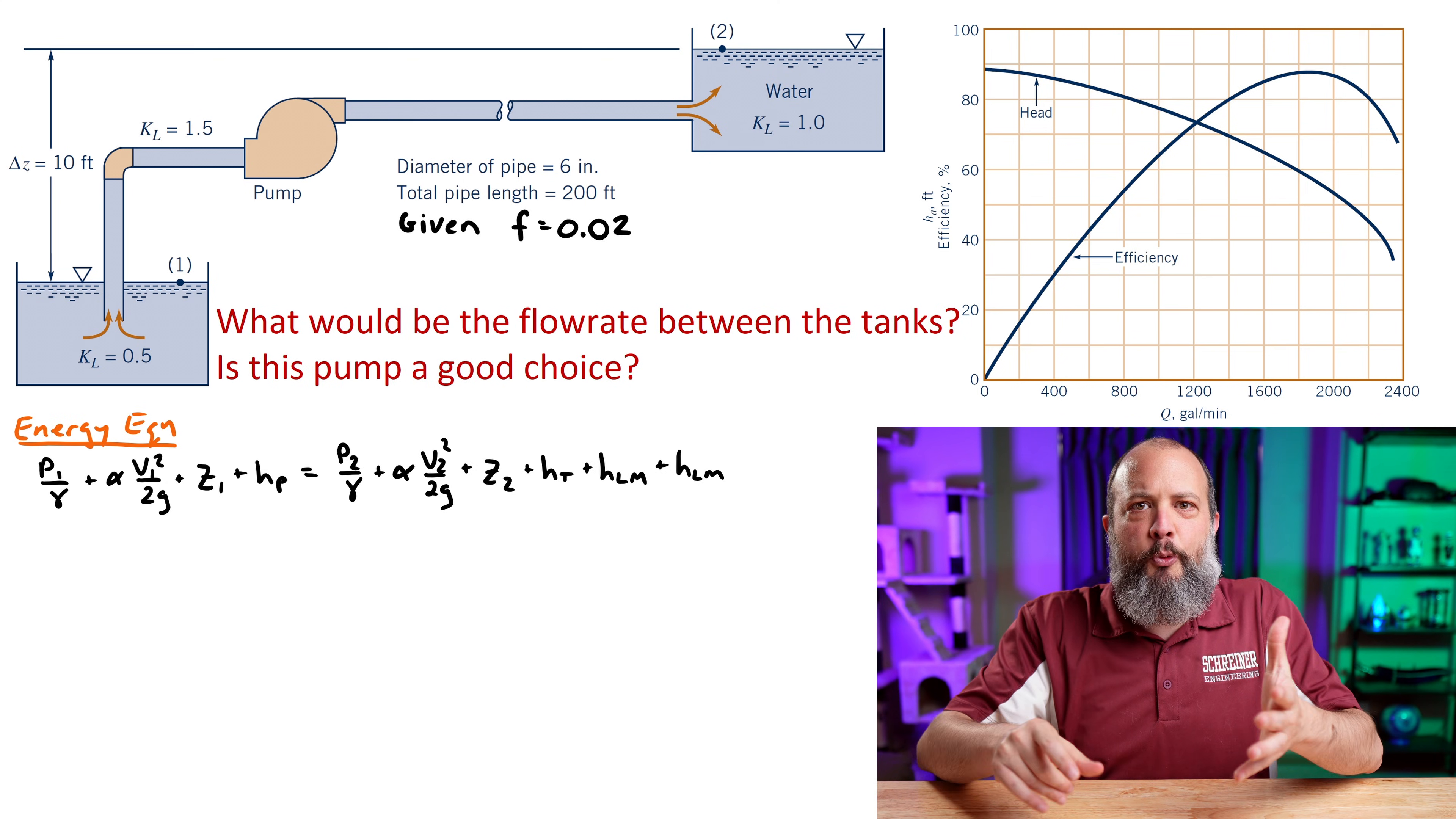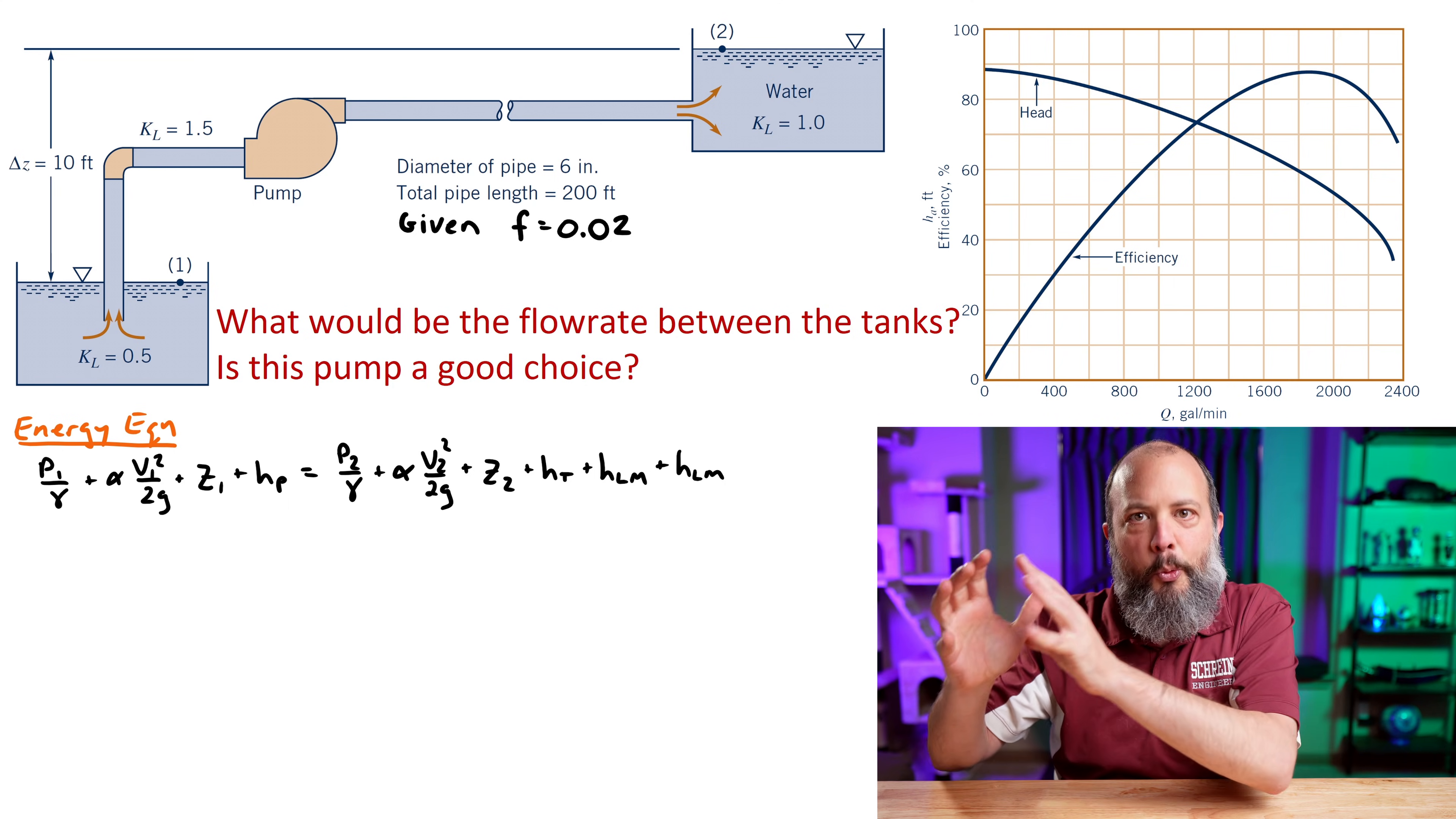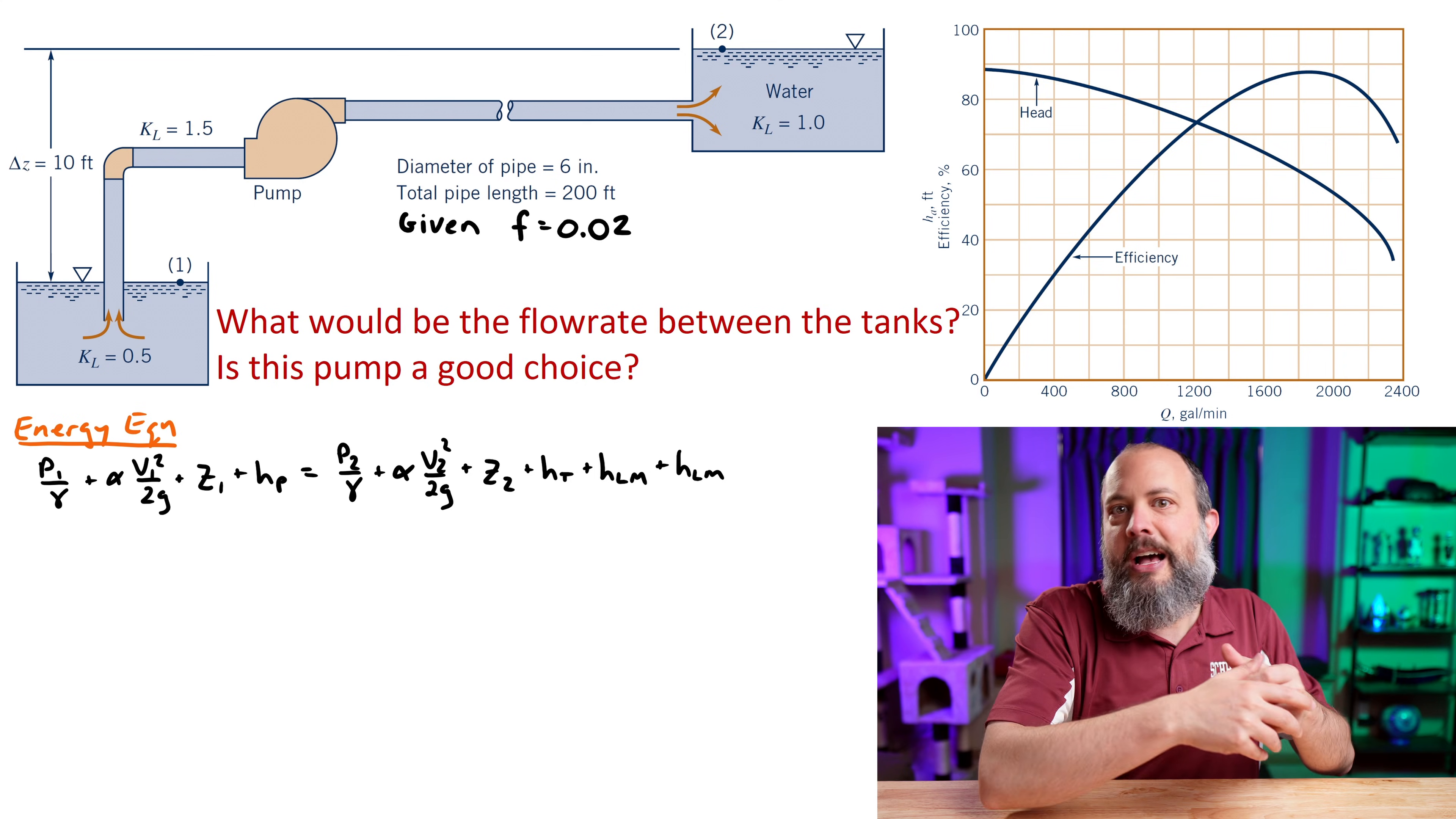And the right side of the equation needs to all be in terms of Q. Just like a regular plot would be like Y equals MX plus B, where instead of Y by itself, you've got head, the vertical axis, and the right side, instead of X, you've got Q.